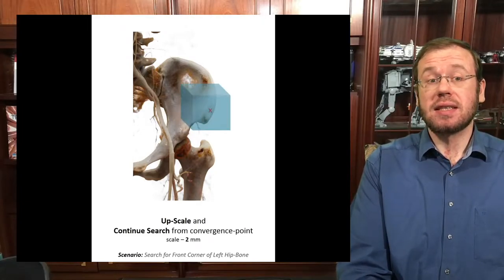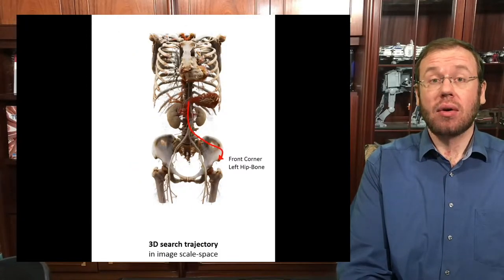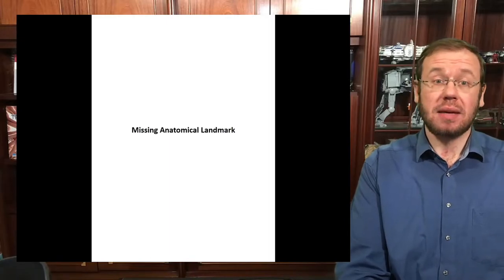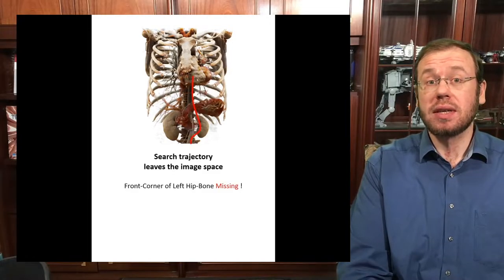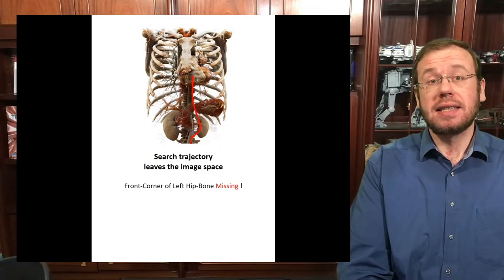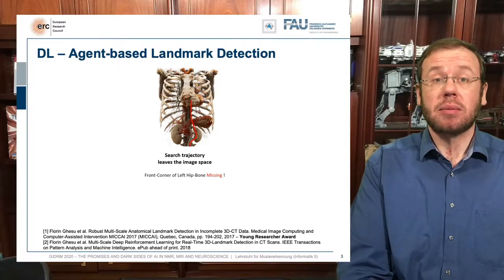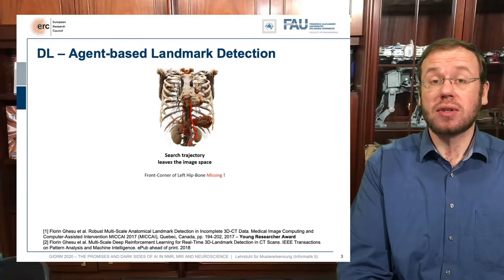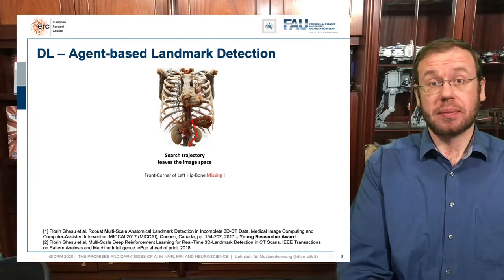The nice thing is that we gradually approach the correct location and also get a path showing what the algorithm did to find the landmark. It really follows anatomical structures. If the landmark is missing, our trained algorithm tries to leave the volume — for example, if the hip bone is not part of the volume. In virtually all cases investigated, we demonstrated that we are not detecting landmarks absent from the volume.